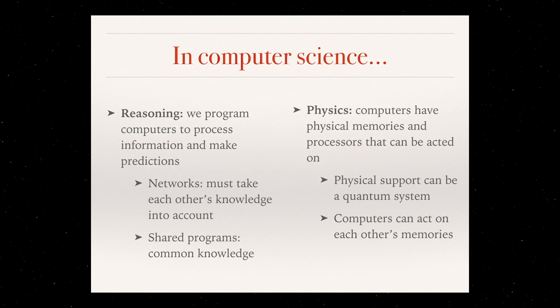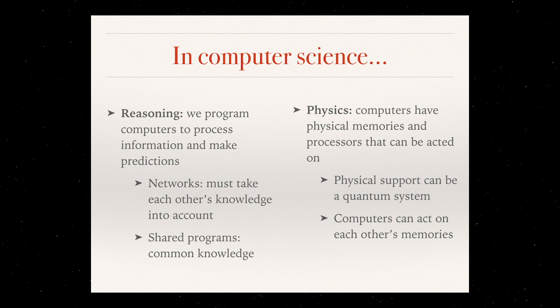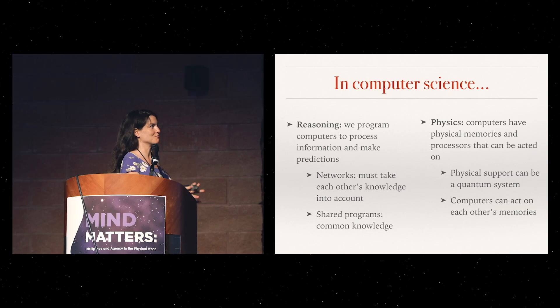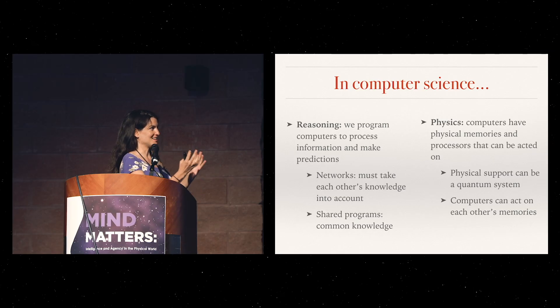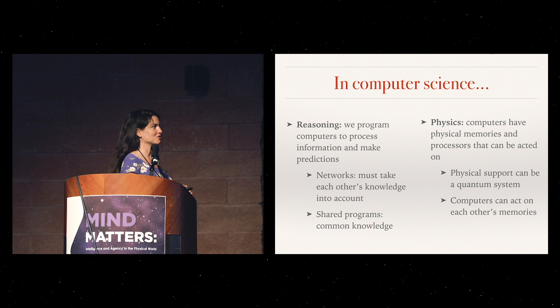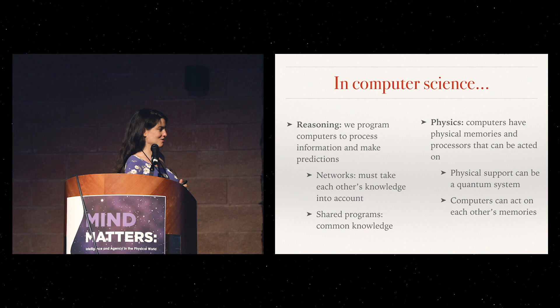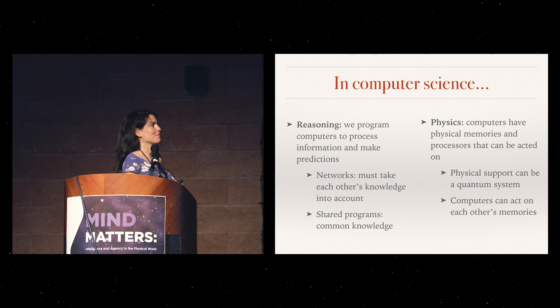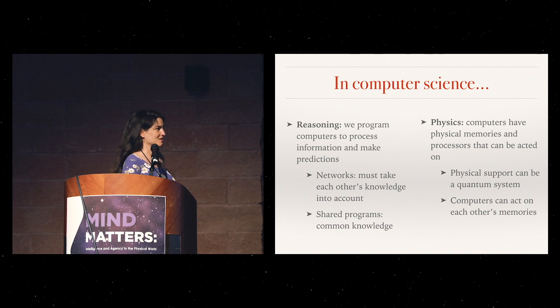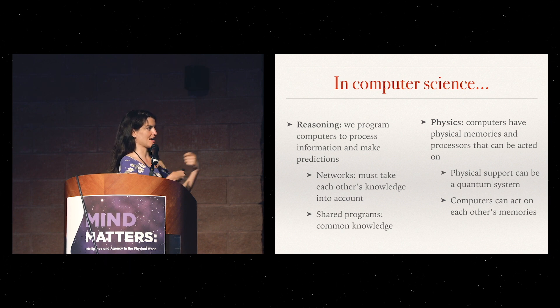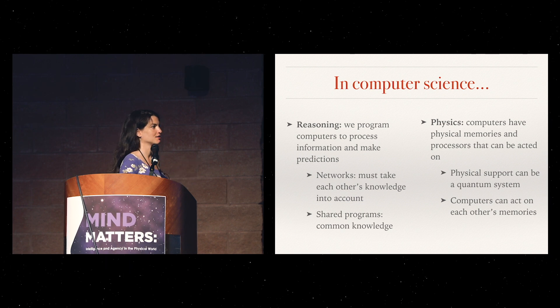Although this so far is not much of an issue, but we hope to make it more of an issue, computers also have physical memories and processors that are still physical systems and they can be acted on. In particular, this can be quantum systems as we all hope to be commonplace in a few years from now. What is not thought of much is that computers then can act on each other's memories, just like I can go and read the memory of a computer so we can have computers also doing this to each other.